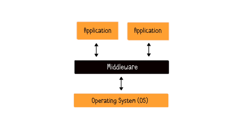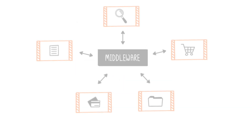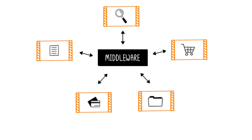Middleware plays a crucial role in ensuring that different applications and systems can communicate and work together seamlessly. In an e-commerce platform, Middleware can ensure that the inventory system, payment gateway, and user interface work seamlessly together, providing a smooth shopping experience for customers. Middleware acts as a bridge, enabling communication and data management between disparate applications in a distributed network.